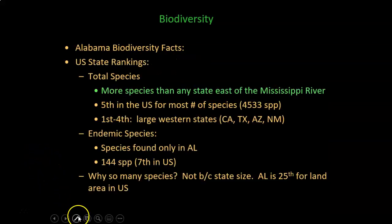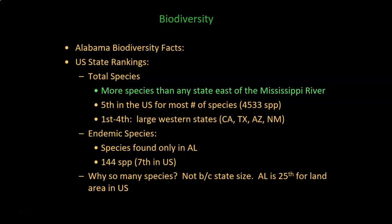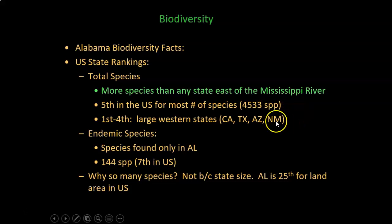One of the things that I think is pretty cool about living in Alabama is that we really rock it out in terms of biodiversity. Alabama has more species than any other state east of the Mississippi River — that's about half of US states. If you look at all US states, we are ranked number five for total numbers of species, at about 4,500 species. The states ahead of us are California, Texas, Arizona, and New Mexico in that order.